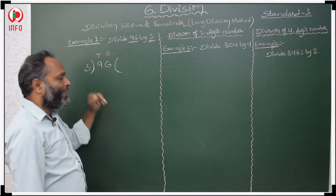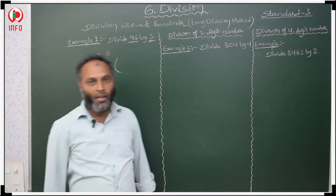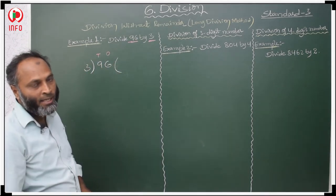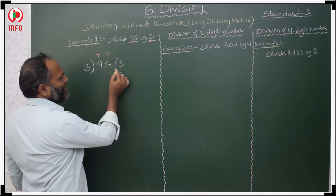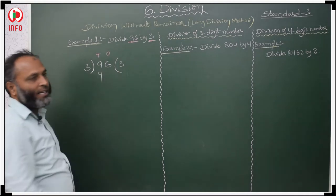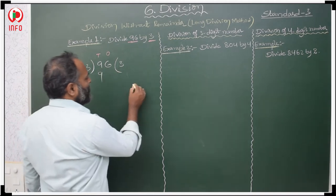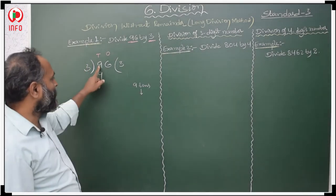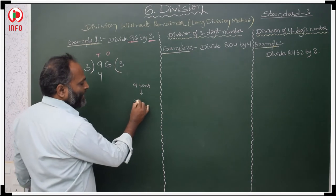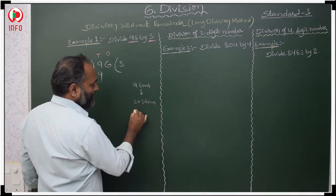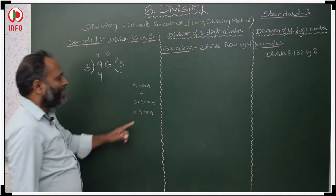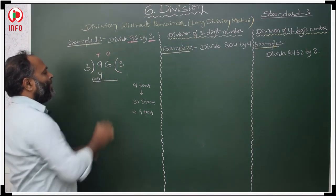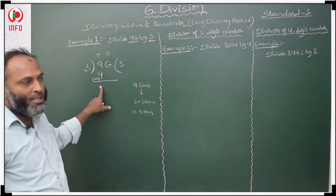Now, when will you get 9 in the 3 times table? Read the 3 table: 3 ones are 3, 3 twos are 6, 3 threes are 9. So 3 threes are 9 tens — the 9 is in the 10's place. We write 3 in the 10's place of the quotient. Then 9 minus 9 is 0, so no need to take that.